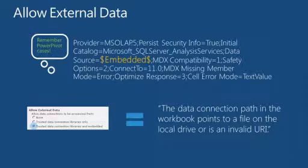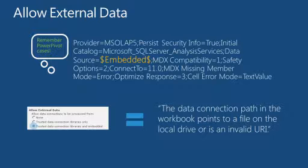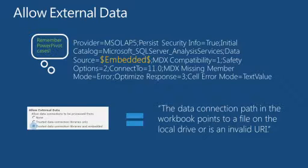With the advent of PowerPivot and the add-in for Excel, this is critical: if you're connecting to a workbook that has a PowerPivot embedded model in it, and in Central Admin you don't have 'trusted data connection libraries and embedded' configured, your connection to your PowerPivot workbook is going to fail. You must have 'embedded' set as the allowed connection type when connecting to PowerPivot data.